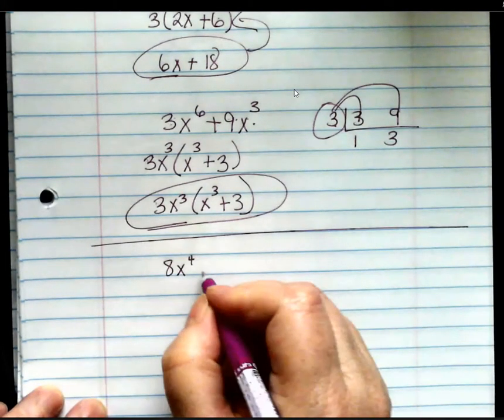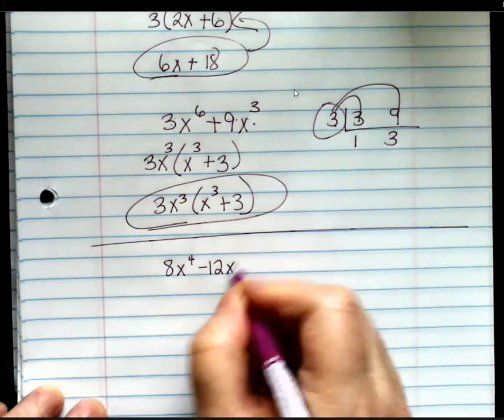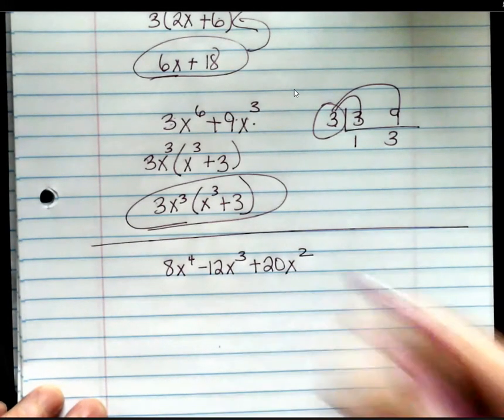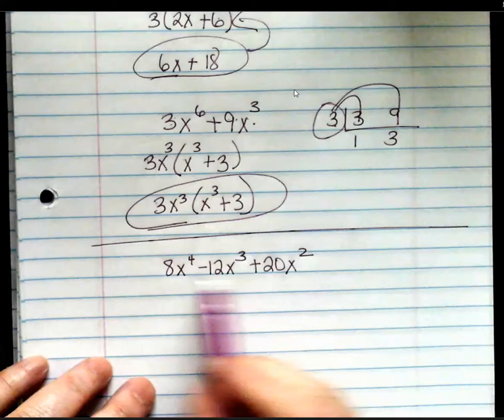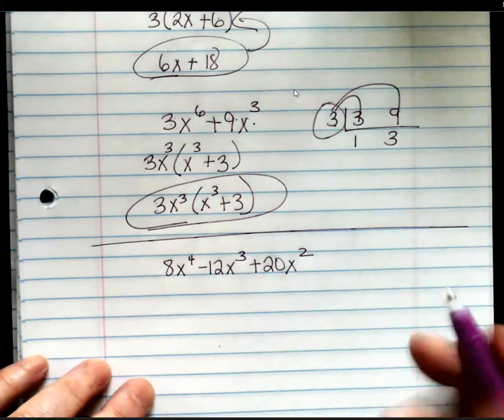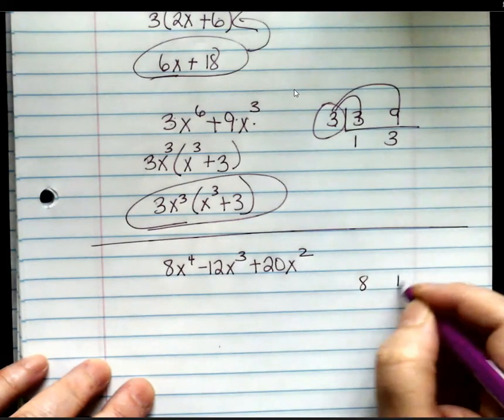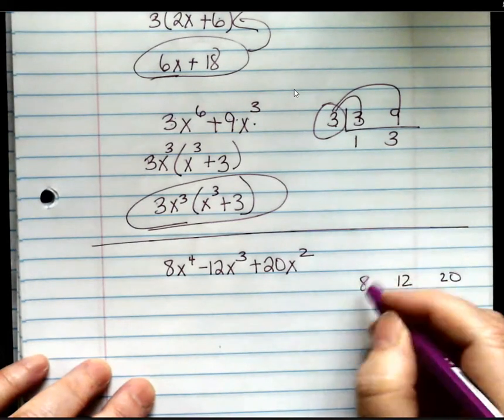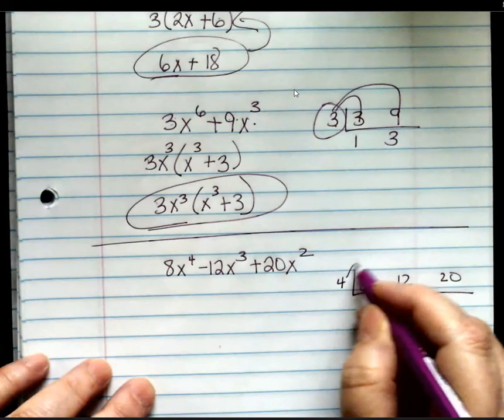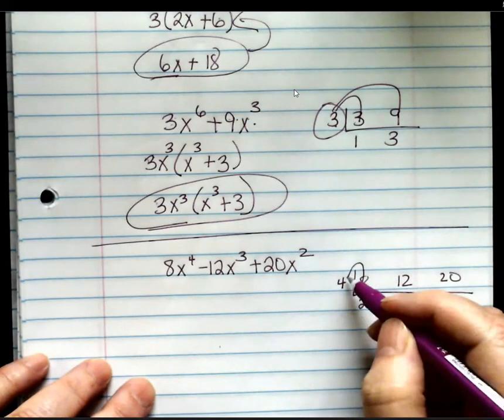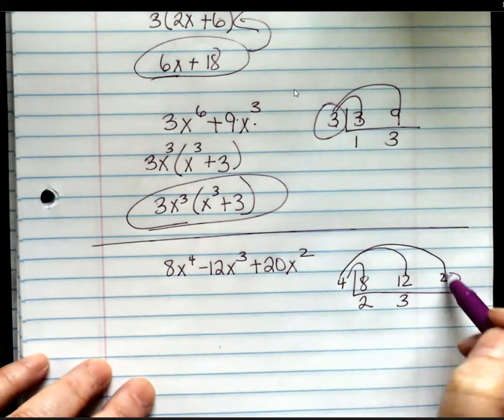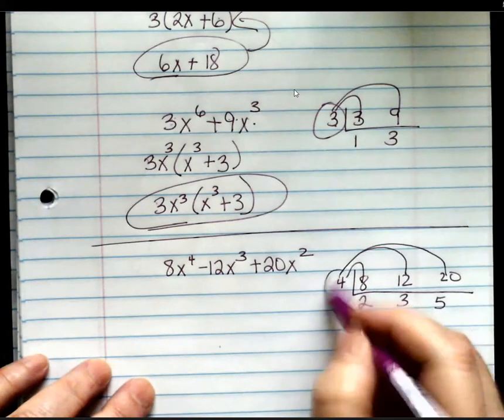8x to the 4th minus 12x to the 3rd plus 20x squared. So, I need to find a number that goes into 8, 12, and 20. That's the largest number. Alright. So, 4 works. 4 goes into 8, 2. 4 goes into 12, 3. 4 goes into 25. So nothing else will work.